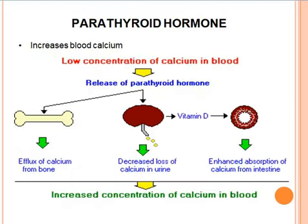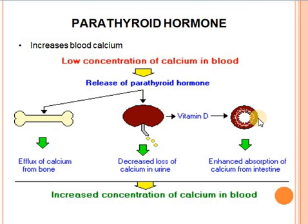Parathyroid hormone increases the blood calcium level by three different ways: it increases the release of calcium from the bones; it stimulates the kidneys to decrease the loss of calcium in the urine; and it stimulates vitamin D for enhanced absorption of calcium from the intestine. In these three ways, parathyroid hormone increases the level of calcium in the blood.